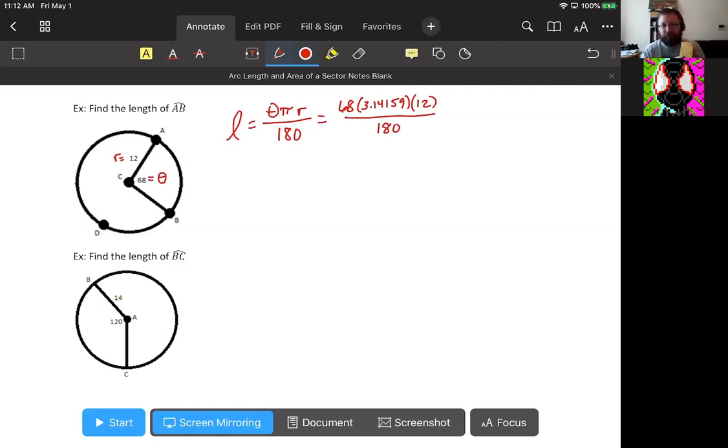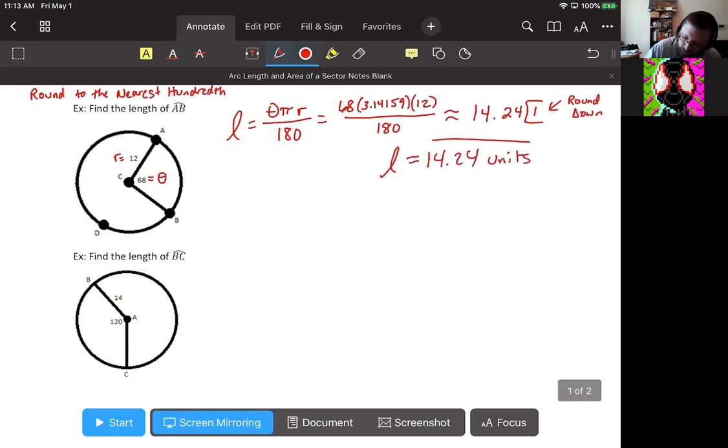so we have 68 times 3.14159 times 12 divided by 180. And we feed that to our calculator, just like it reads. So we hit the fraction button. If you have one, if not, just multiply and then divide. And we are going to round to the nearest hundredth as practice for our assignment. Nearest hundredth is two decimal places. So our value here is going to be 14.241, and that third digit tells us to round down. So our answer would be that L is about 14.24 units. And on delta math, you will not need to include units.